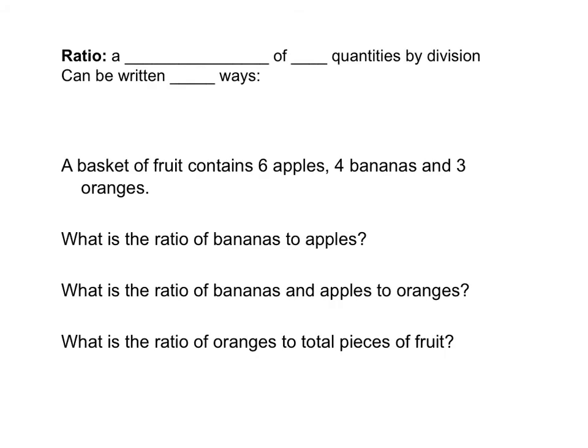So a ratio is basically a comparison of two quantities by division. And they can be written three different ways. So you might see, for example, one to two with a colon in between it. You might see it written just saying like one to two. And then the most mathematical way that you'll see it is actually written as a fraction.